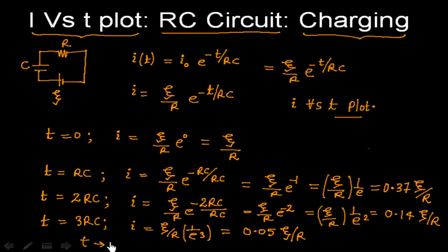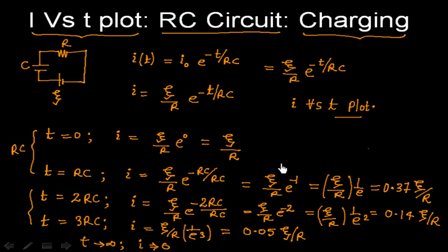When time goes to infinity, e^(−∞) becomes 0, so current goes to 0. So the important points are: at t = 0 current is ξ/R; in one time constant current reduces to 37% of the original — a reduction of 63%. In the second time constant it reduces to 14%, and in the third time constant it is only 5% of the initial current.